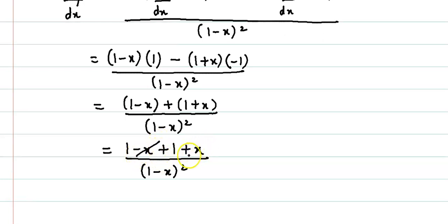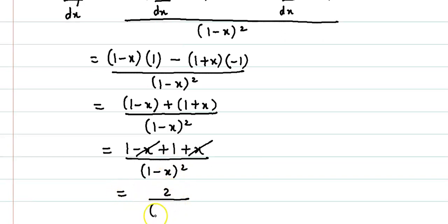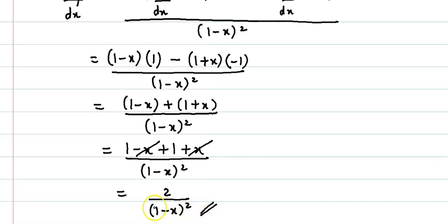Minus x cancels with plus x. So 1 plus 1 is 2, and we have dy by dx is equal to 2 upon 1 minus x the whole square. This is the value for dy by dx.